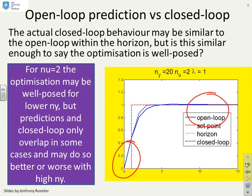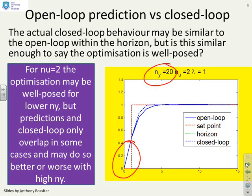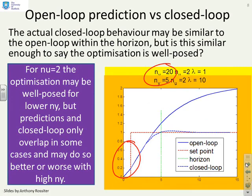If we take ny up to 20, what you'll notice is now the closed loop simulation and the open loop predictions are very similar. So in this case you've got a well posed optimization. So taking nu equals 2 seems to have been done well for this example, as long as the output horizon was big enough.